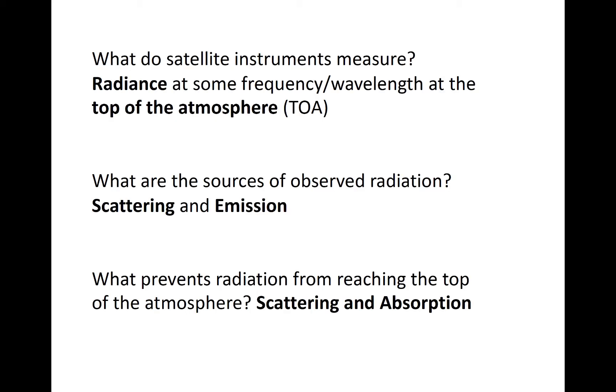Satellite instruments measure radiance, which is related to the intensity of radiation at a certain wavelength at the top of the atmosphere. Sources of the radiation include emission by objects on Earth or scattering of radiation into a path directed toward the satellite.